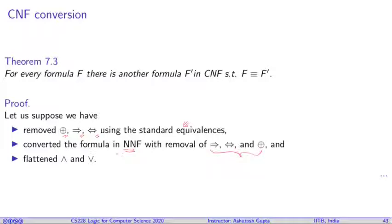Now, we are left with only AND, OR, or negation symbol. Since it's an NNF, so all the negations are on top of variables. And all other structure is using only two connectives, conjunction and disjunction. What we need to do is we need to flatten them.